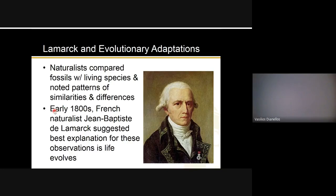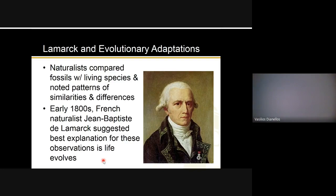In the early 1800s, French naturalist Jean-Baptiste de Lamarck suggested that the best explanation was that life evolves. Know his name for the exam — just in case — because Lamarck is the first person credited for suggesting that life evolves. You don't need to memorize that it was the early 1800s or that he was French or his full name. Just think: Lamarck was the first person credited for saying that life evolves.